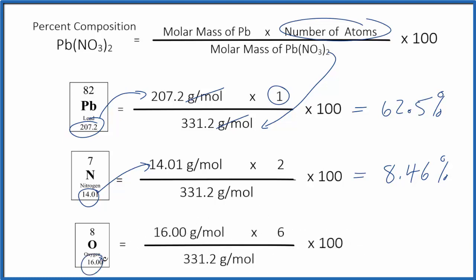So we have that 16.00. We multiply by 6. 2 times 3. That gives us 6 oxygen atoms. We have our molar mass down here. So multiply, then divide. Take that number, multiply by 100. We get 29.0%, and that's the percent of the oxygen here in Pb(NO3)2.